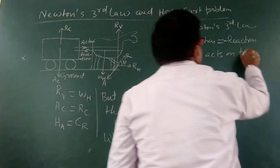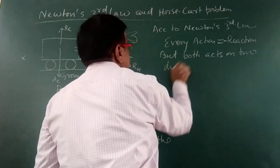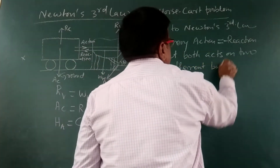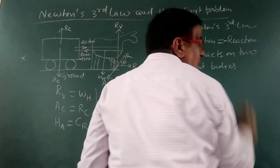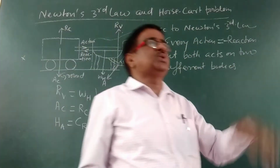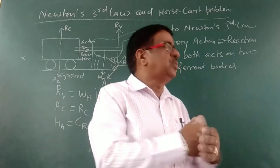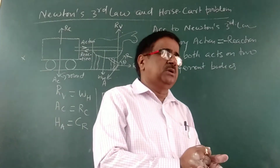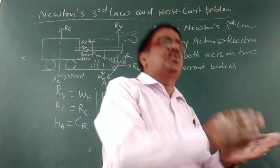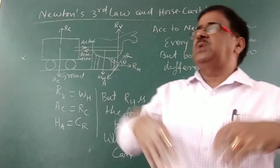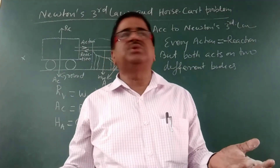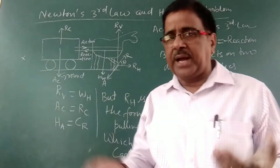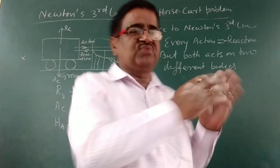Both action and reaction act on two different bodies. Now, if action is equal to reaction, then how will the cart be pulled by the horse? If the horse applies force on the cart, the cart also applies the same force on the horse — so how is it possible to pull the cart?